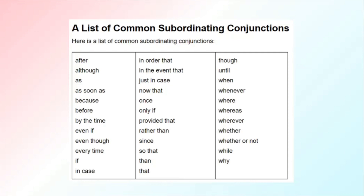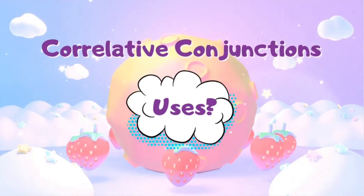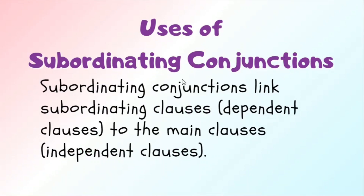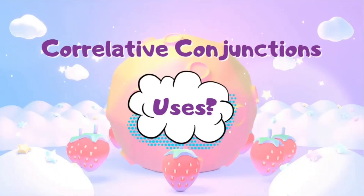When will you introduce subordinating conjunctions? You will give this to a fourth or fifth grader. But before that, you should have cleared the ideas of clauses and phrases. If your students don't know what independent and dependent clauses are, or what phrases are, it's of no use to go to subordinating conjunctions because they are interlinked. So the age group for this is fourth or fifth grade, or kids who are already familiar with clauses and phrases.